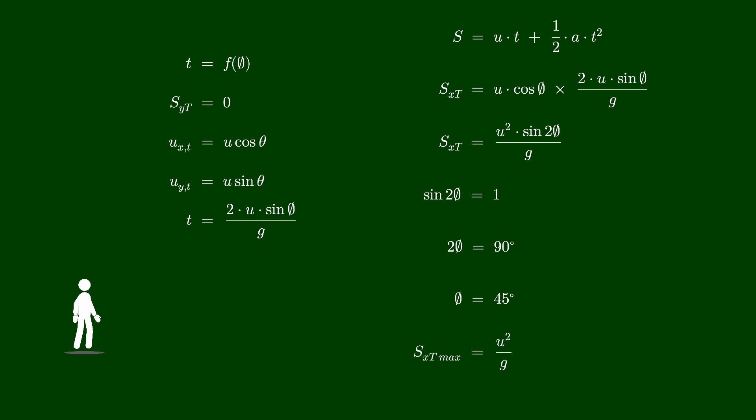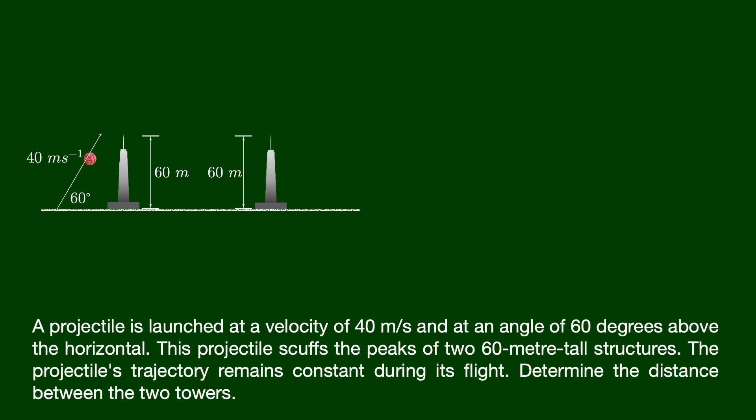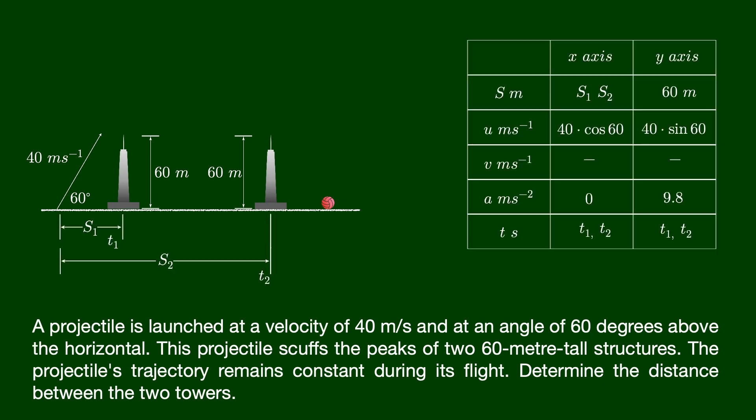We can calculate the maximum horizontal range as shown here. In this question, we will look at how to make a connection between the vertical and horizontal motion of a projectile. A projectile is launched at a velocity of 40 meters per second and at an angle of 60 degrees above the horizontal. This projectile scuffs the peaks of two 60-meter tall structures. Determine the distance between the two towers. The motion in the horizontal direction is independent of the vertical motion. As a result, we can use the kinematic equation in either direction independently. Please keep in mind that time is shared in both directions.